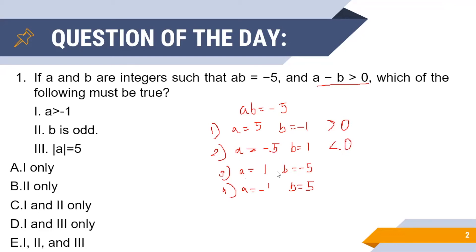In case three, a minus b is again six, and hence it is greater than zero. In case four, we see a minus b equals minus six, and hence it is less than zero. Thus we can eliminate cases two and four.